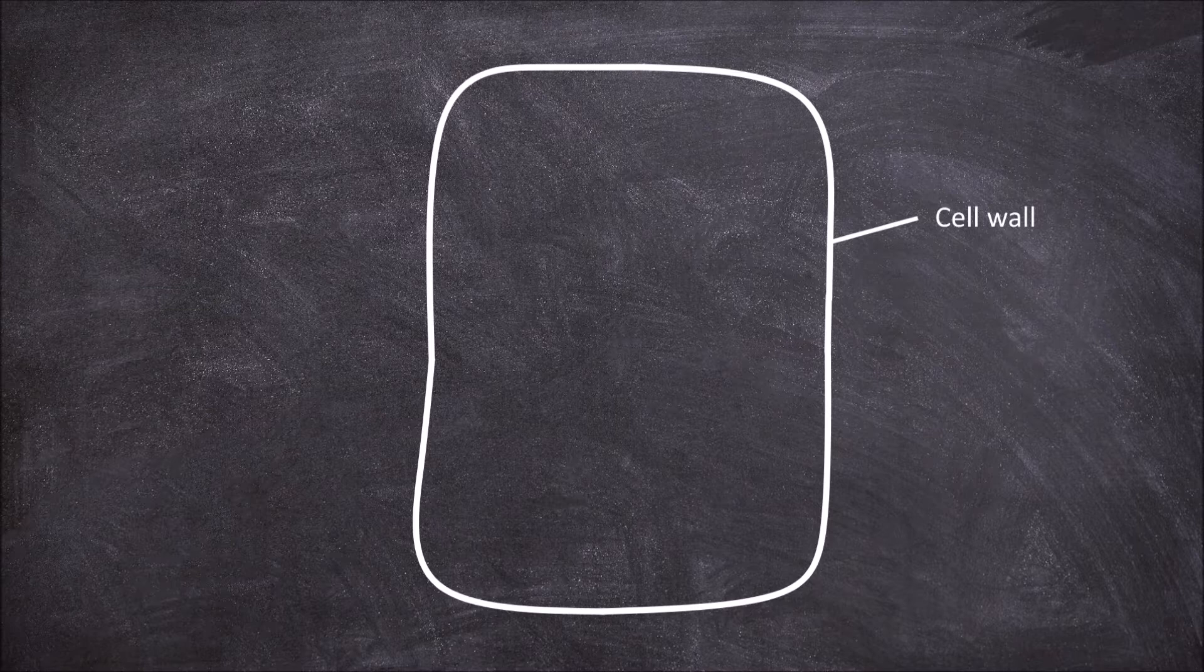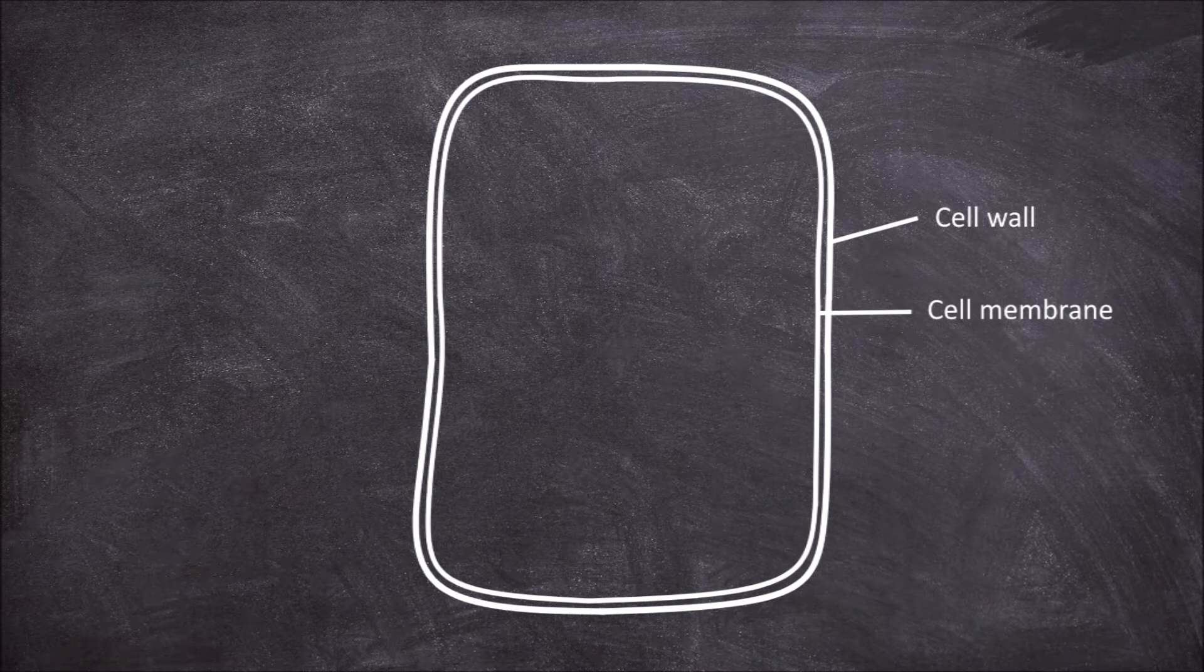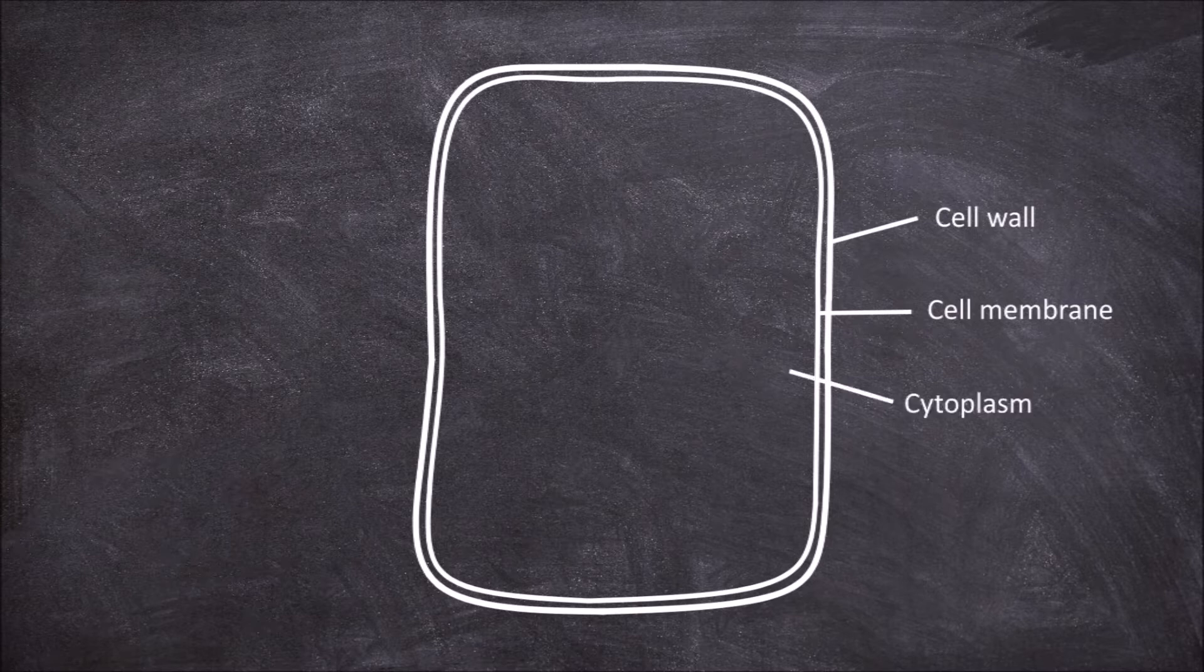The plant cell also has a cell membrane. It functions in controlling what can move in and out of the cell. Inside the cell is a jelly-like substance called the cytoplasm.